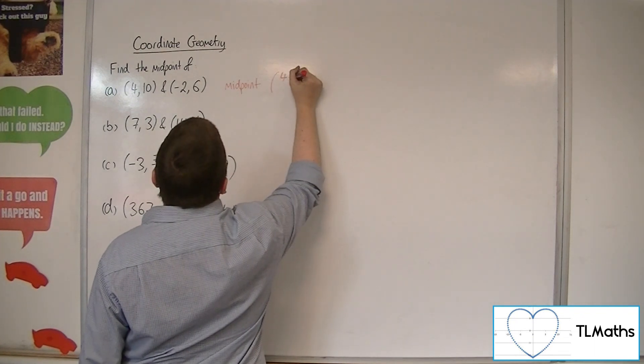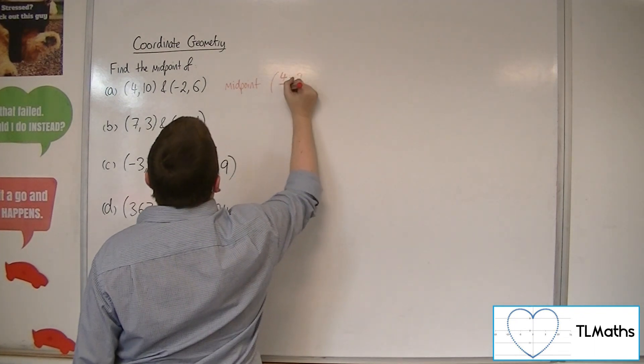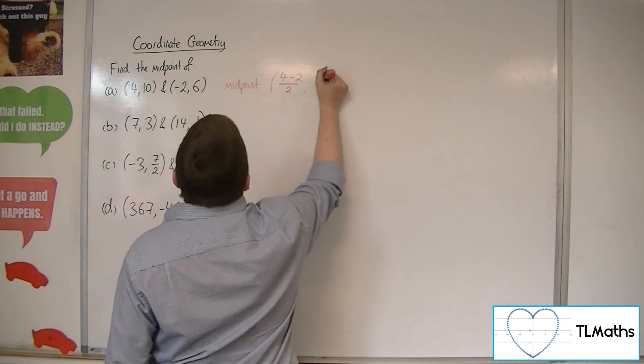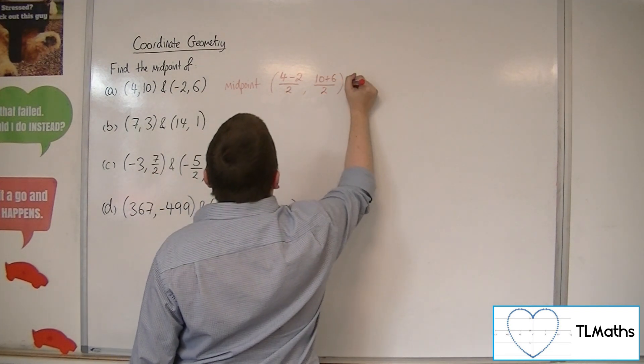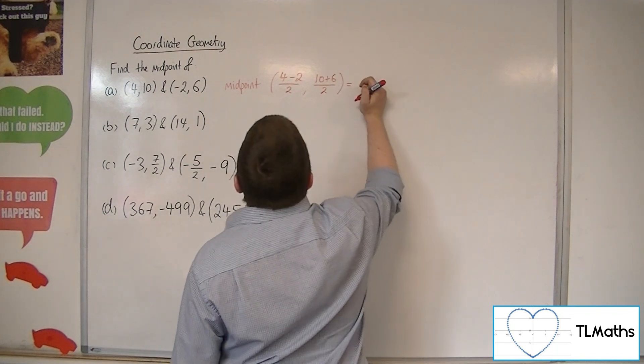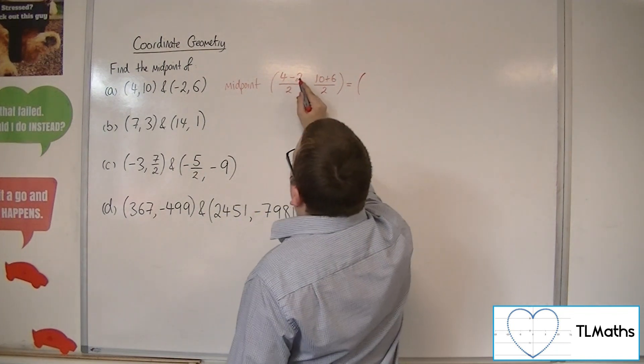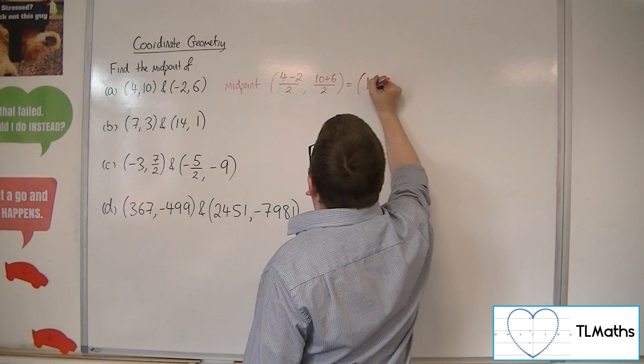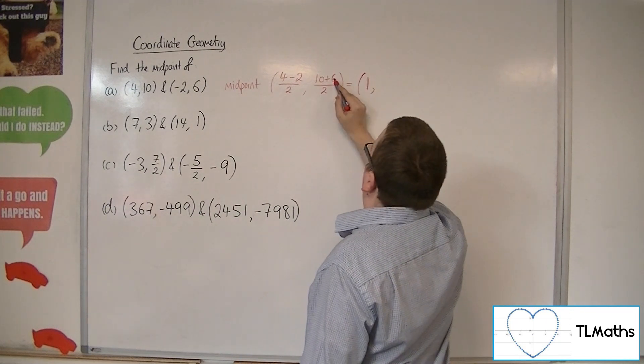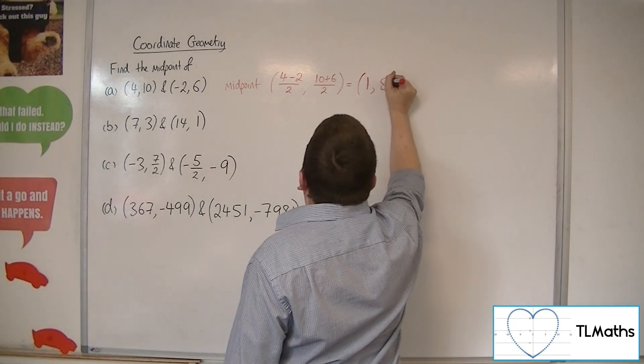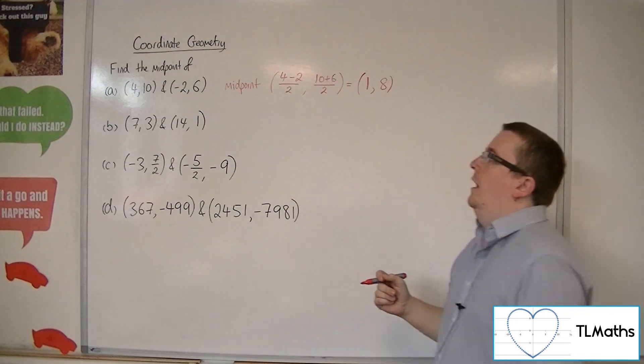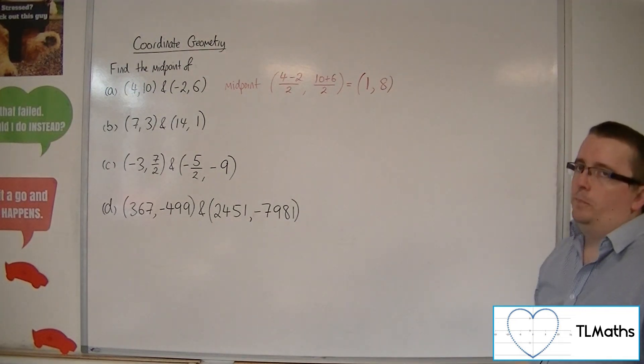We're going to have 4 plus minus 2, which is the same as 4 minus 2, over 2, and 10 plus 6, over 2. So we have 4 take away 2 is 2, 2 divided by 2 is 1. 10 plus 6 is 16, divided by 2 is 8. So 1, 8 is the midpoint of these coordinates.